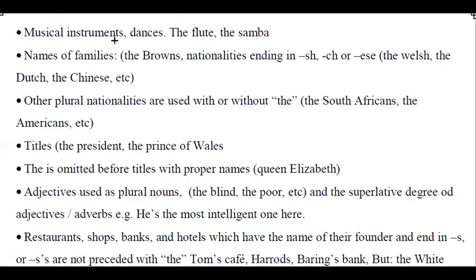'The' is also used with musical instruments and dances like the flute or the samba; names of families like the Browns; nationalities ending in -sh, -ch, or -ese like the Welsh, the Dutch, the Chinese. Other plural nationalities can be used with or without 'the' — we can say 'the South Africans' or just 'South Africans', 'the Americans' or just 'Americans'; and titles like 'the President' or 'the Prince of Wales'.